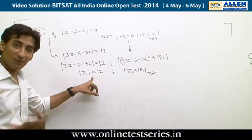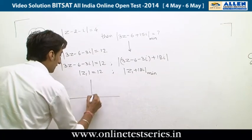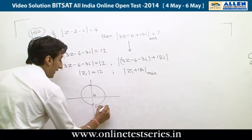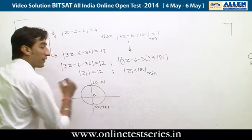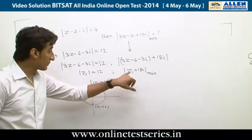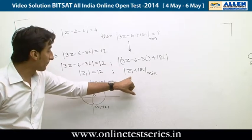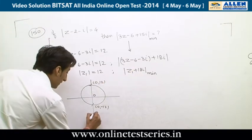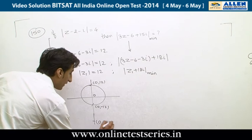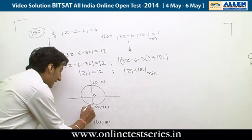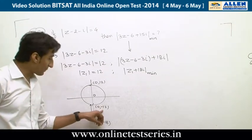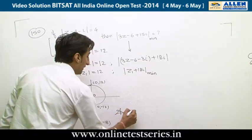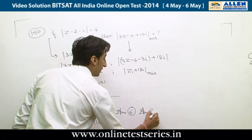The equation |Z1| = 12 is a circle centered at the origin with radius 12. The expression |Z1 + 18iη| represents the distance from points on this circle to the point (0, -18). The closest point on the circle to (0, -18) is (0, -12), giving a minimum distance of 18 - 12 = 6. Hence the answer is option C.